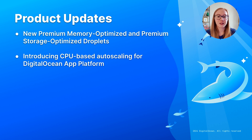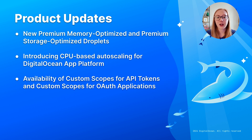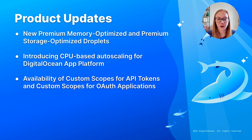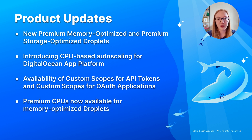We've also announced the availability of custom scopes for API tokens and custom scopes for OAuth applications, which means users can create personal access tokens to help secure workflows. Premium CPUs are also now available in memory-optimized droplets in several regions.